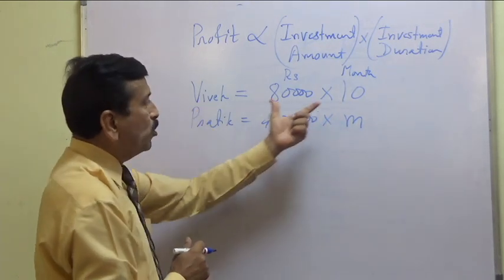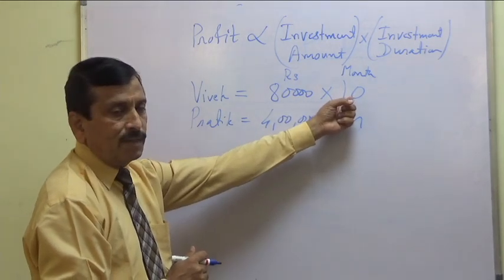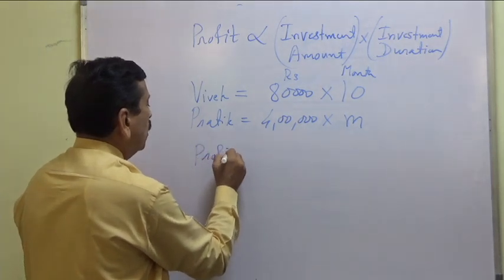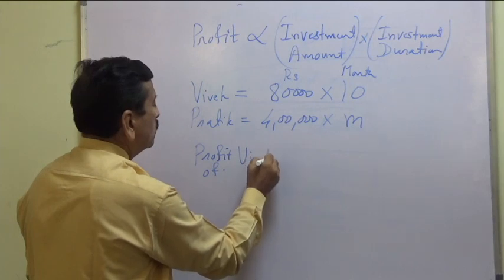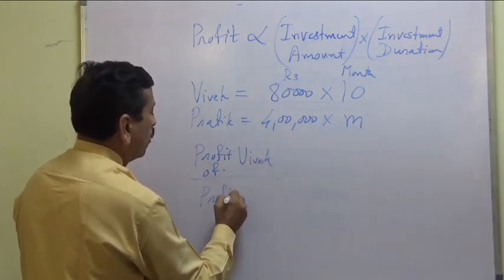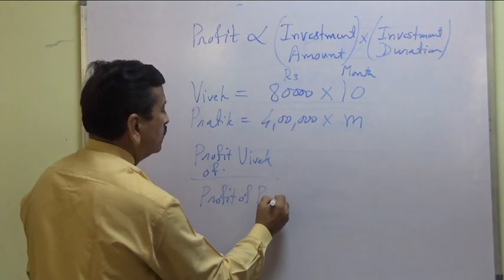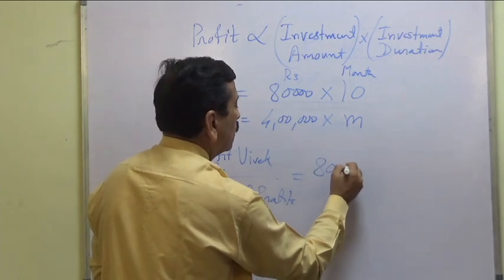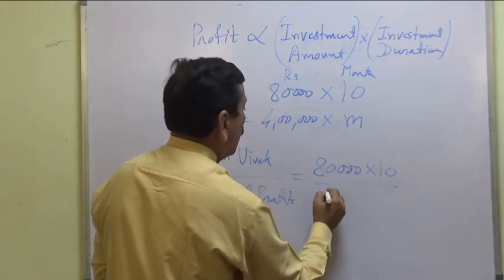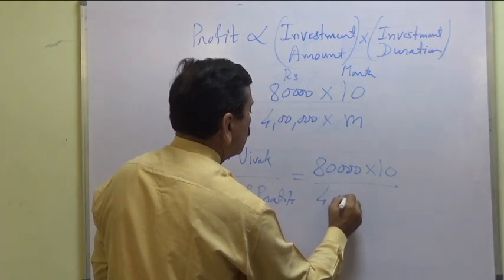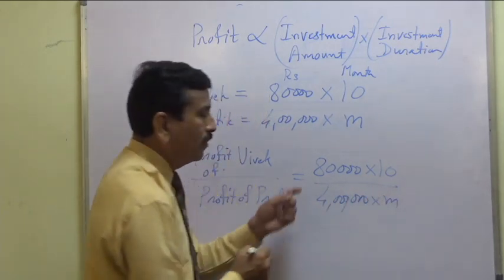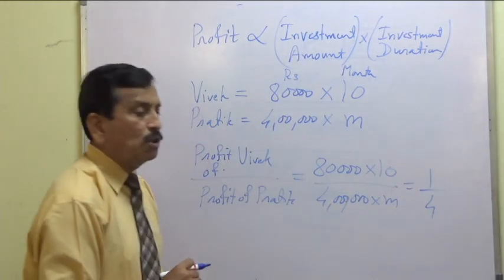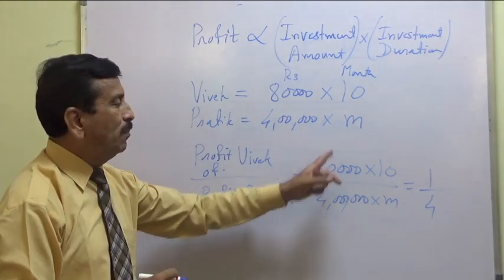Profit is proportional to investment times duration of investment. Therefore, profit of Vivek to profit of Pratik is proportional to 80,000 times 10 divided by 4 lakhs times M. But it is given that the ratio is 1 to 4. So we take this equation with only one unknown.